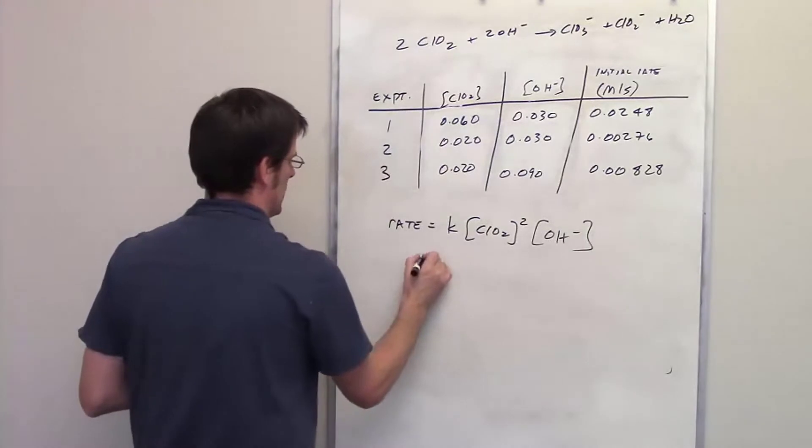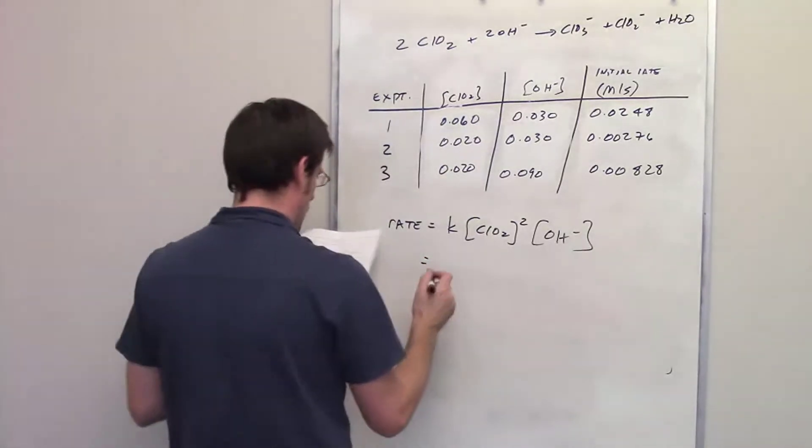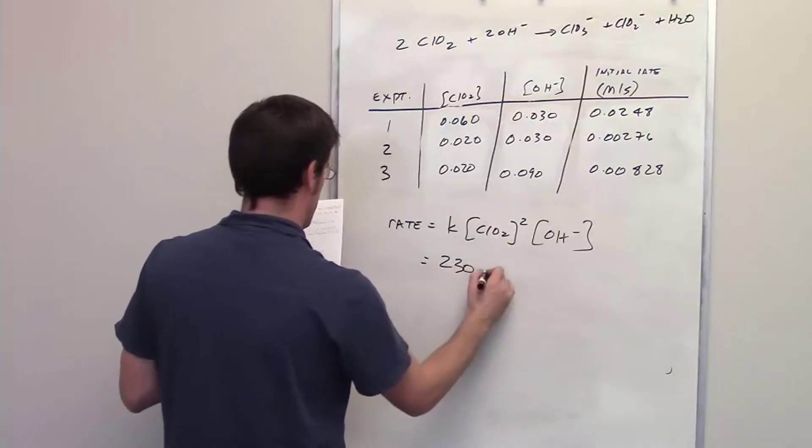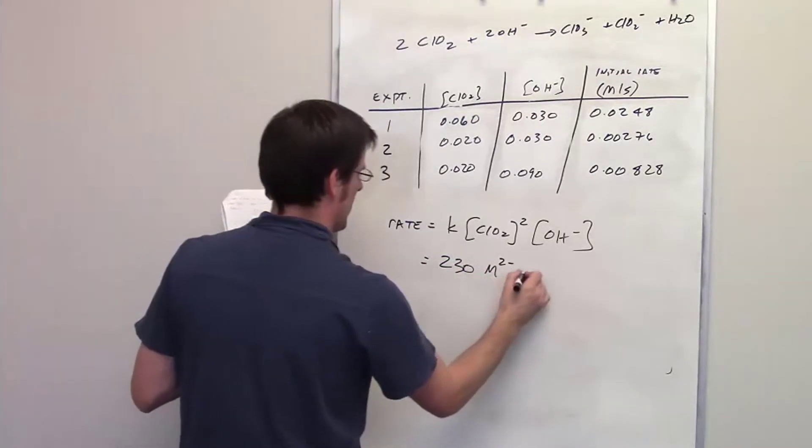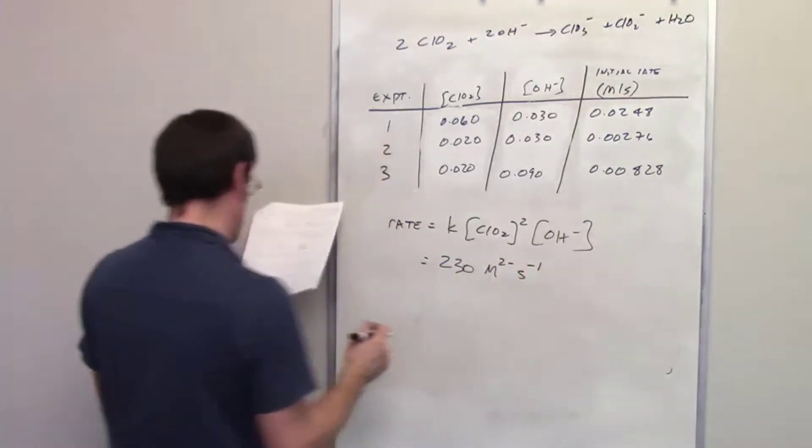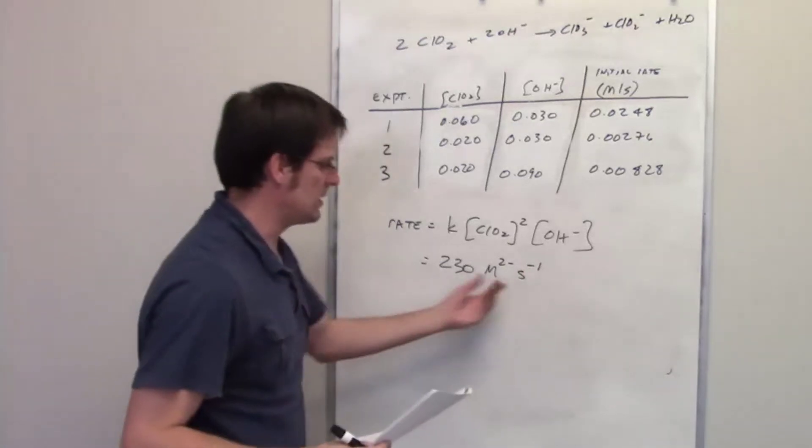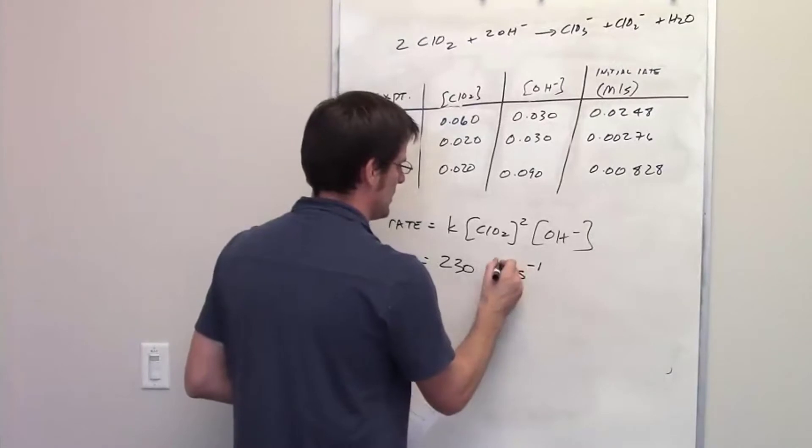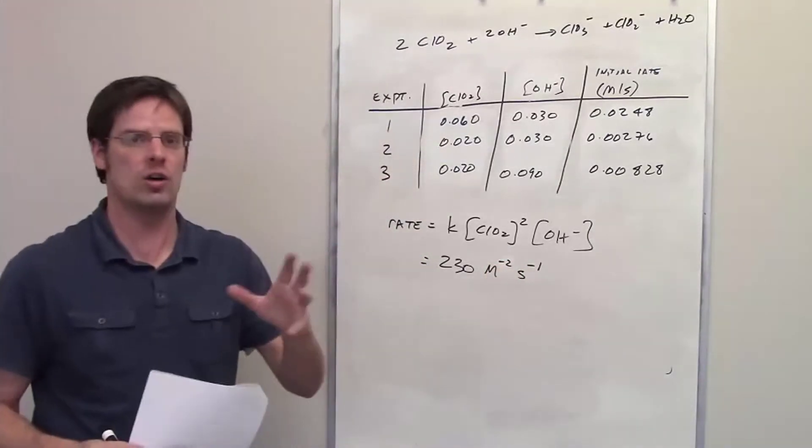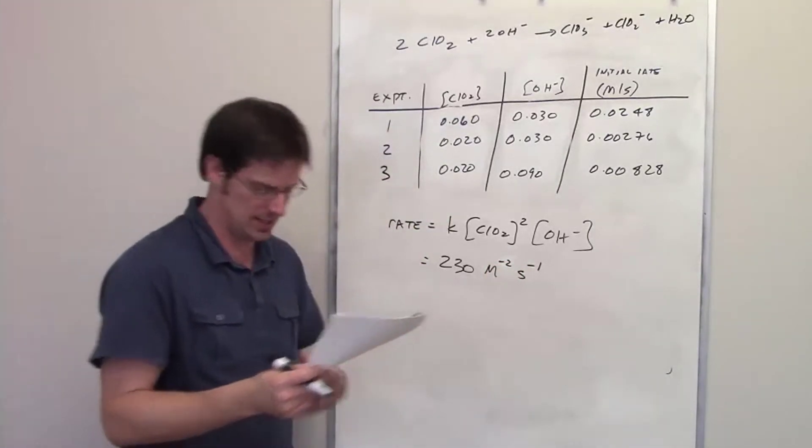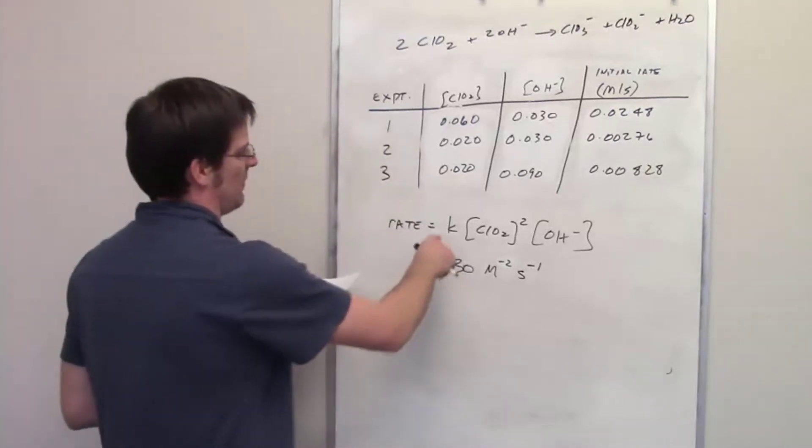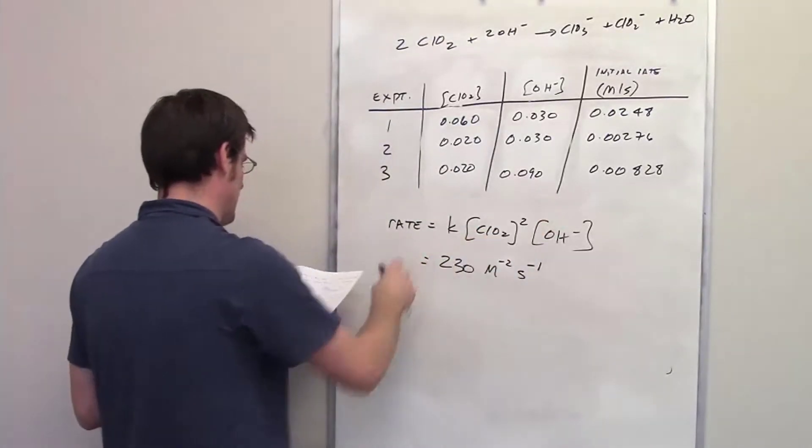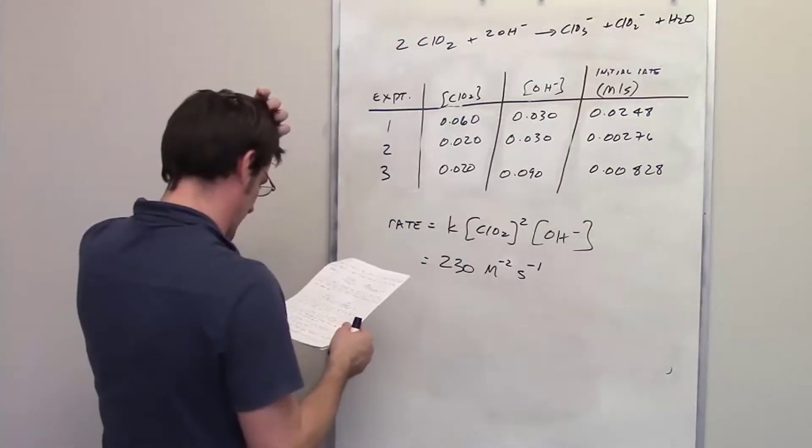We also determined that k is equal to, or I left you guys to determine that k is equal to 230 moles to the negative two powers multiplied by inverse seconds. That seems like a ridiculous set of units, but that actually turns out to be the case for a lot of these rate constants. They often do have ridiculous sets of units because they have to cancel out properly with the units for these components in order to give you a rate of molars per second. So that's sort of how it goes down.